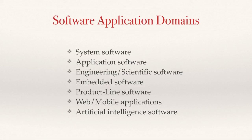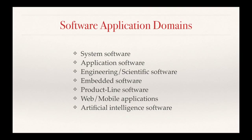Product line software is software produced by assembling both reusable and custom components for products that have similar systems. For example, a company with a line of televisions that have slightly different features might use product line engineering to put together software for those TV sets. For examples of web applications, you have Amazon, Google, and Orbitz.